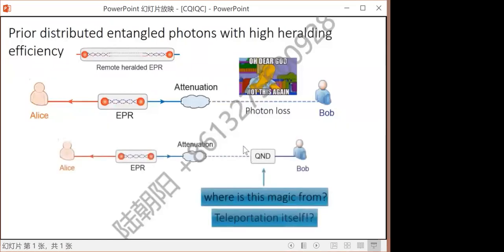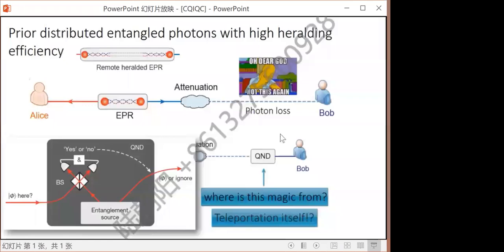One way to overcome this problem is if we can do this when the photon is just about to arrive at Bob, we have this magic quantum non-demolition measurement, which means to see a photon but without destroying it. How can we implement the QND? Interestingly, quantum teleportation itself is QND.